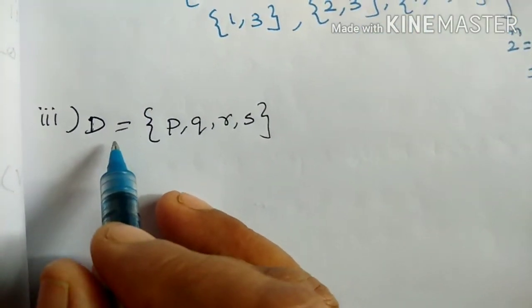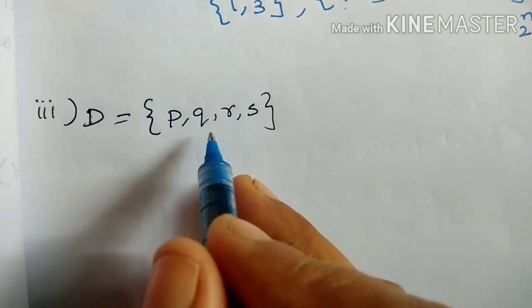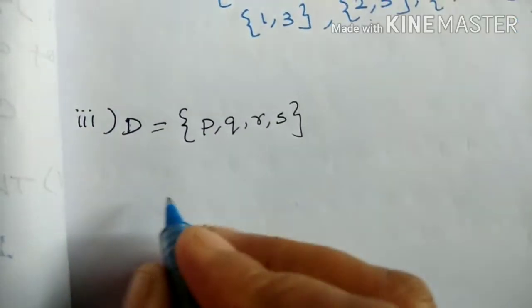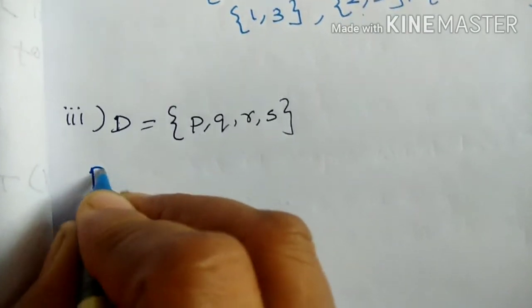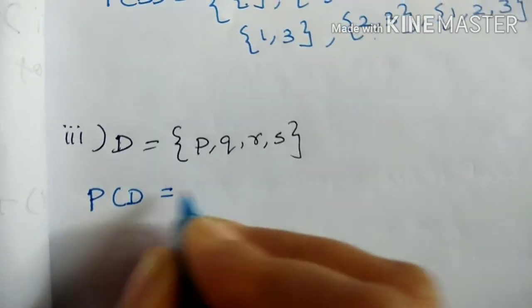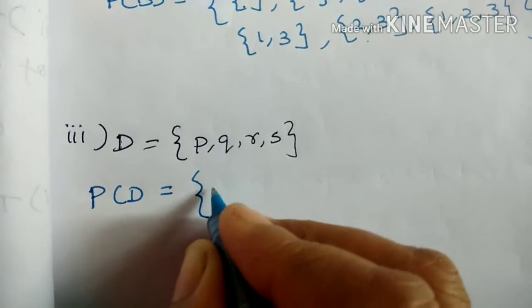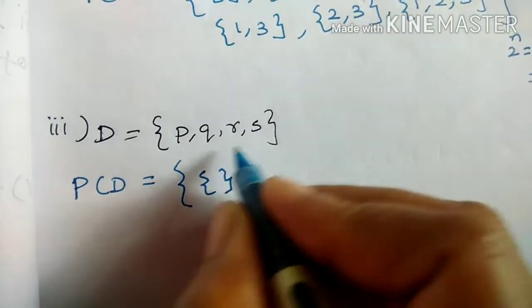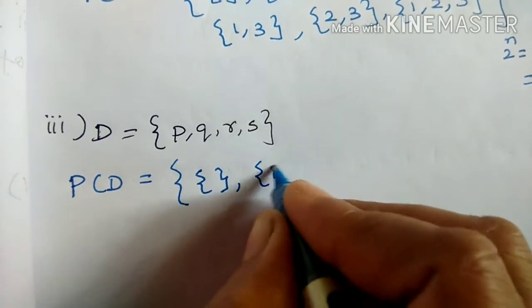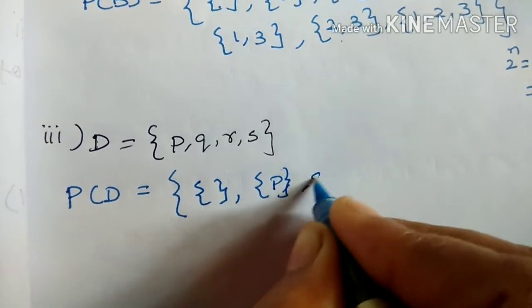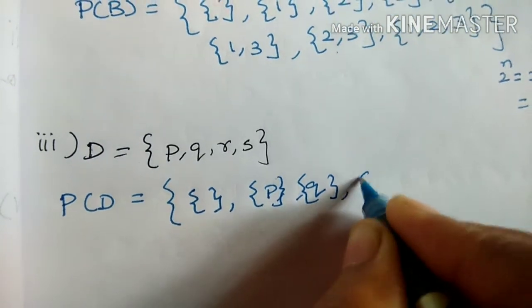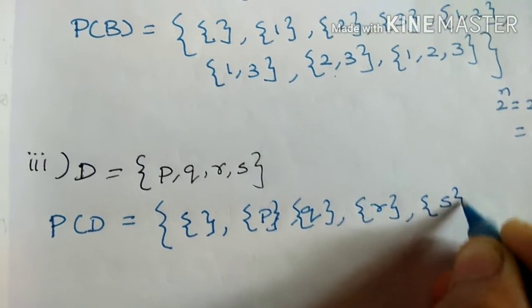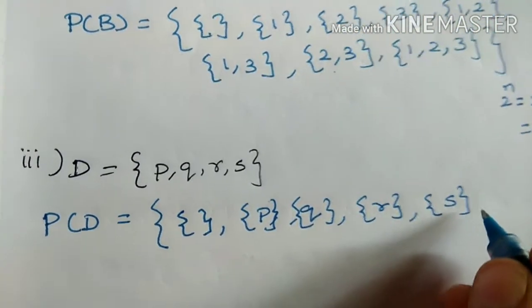Third question. D equal to {P, Q, R, S}. How do you write the power set? P of D equal to set bracket. Null set. Next, {P}. Next, {Q}. Next, {R}. Next, {S}.